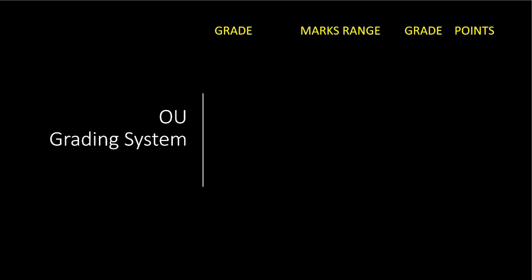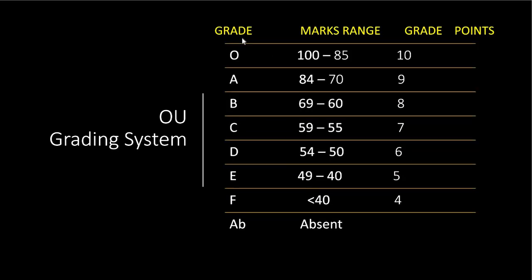Now we'll see the OU grading system — on what basis they give you credits and grades. Grade O stands for Outstanding, with a marks range of 85 to 100, and a grade point of 10 per subject. If you got marks between 70 to 84, the grade will be A with grade points of 9. If you got marks between 60 to 69, the grade will be B with grade points of 8.